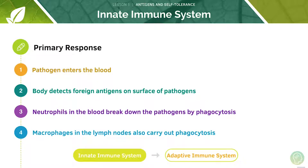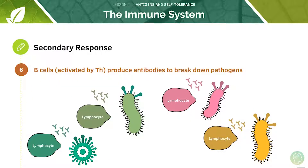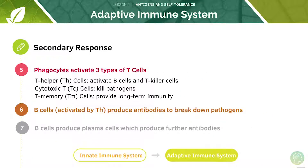Here's the whole of the primary response. Now let's move on to the secondary response. Here the phagocytes will activate three types of T cells. The lymphocytes are specific for each type of antigen. Then we have the B cells which will be activated by the T helper cells. These will produce the antibodies to break down the pathogens. The B cells then produce plasma cells which in turn make more antibodies.